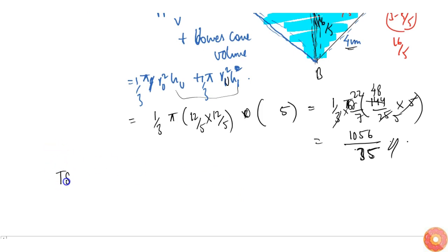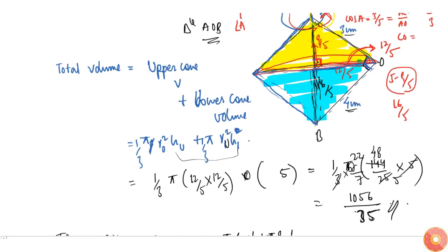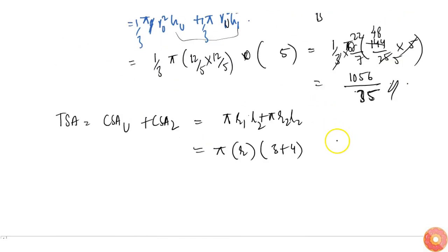Now we need total curved surface area. So total surface area will be curved surface area of upper part and curved surface area of lower part, which will be equal to pi r1 l1 plus pi r2 l2. Since r is same, pi into r I can take common, l1 plus l2 is simply 3 plus 4, because as you can see slant heights are simply 3 and 4.